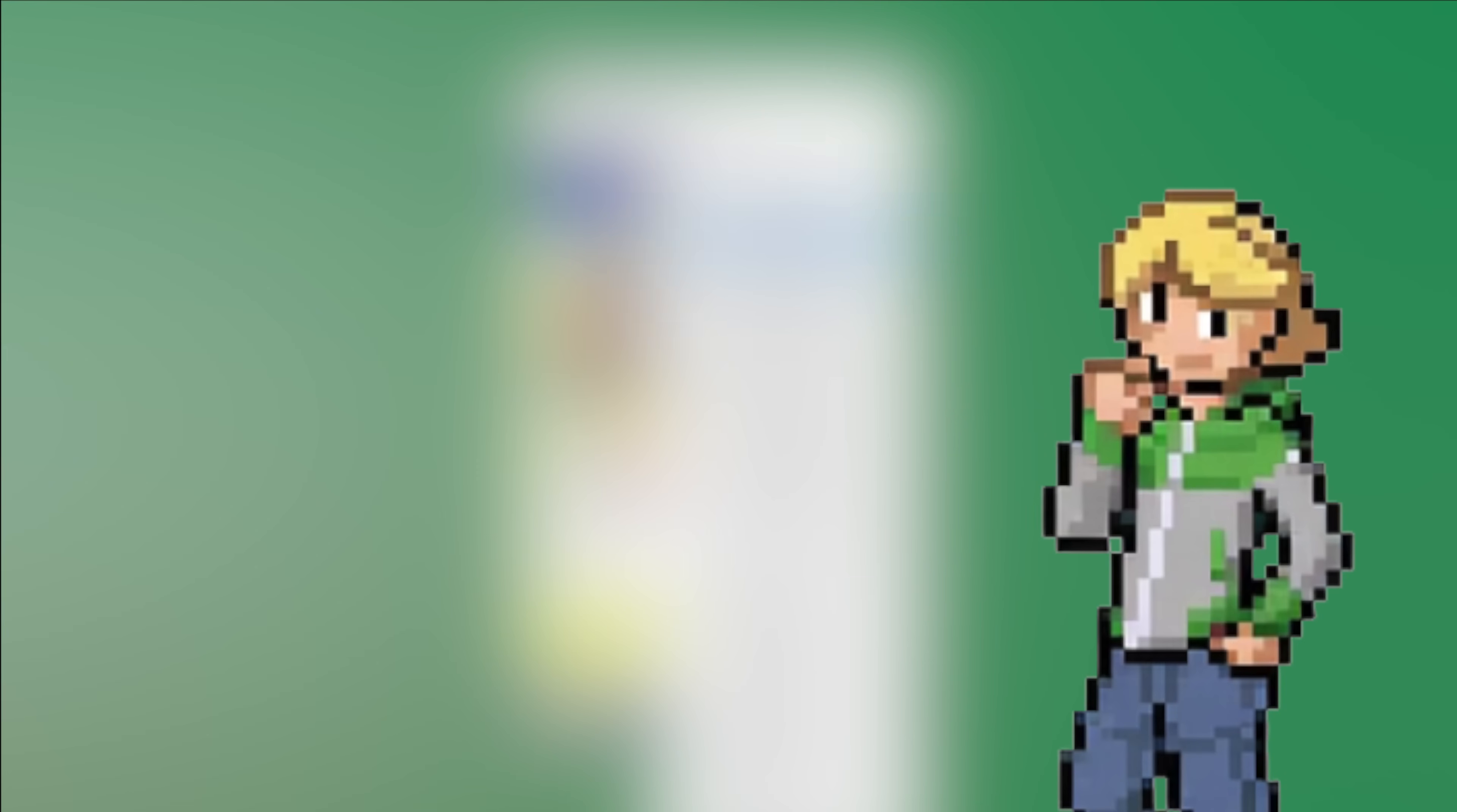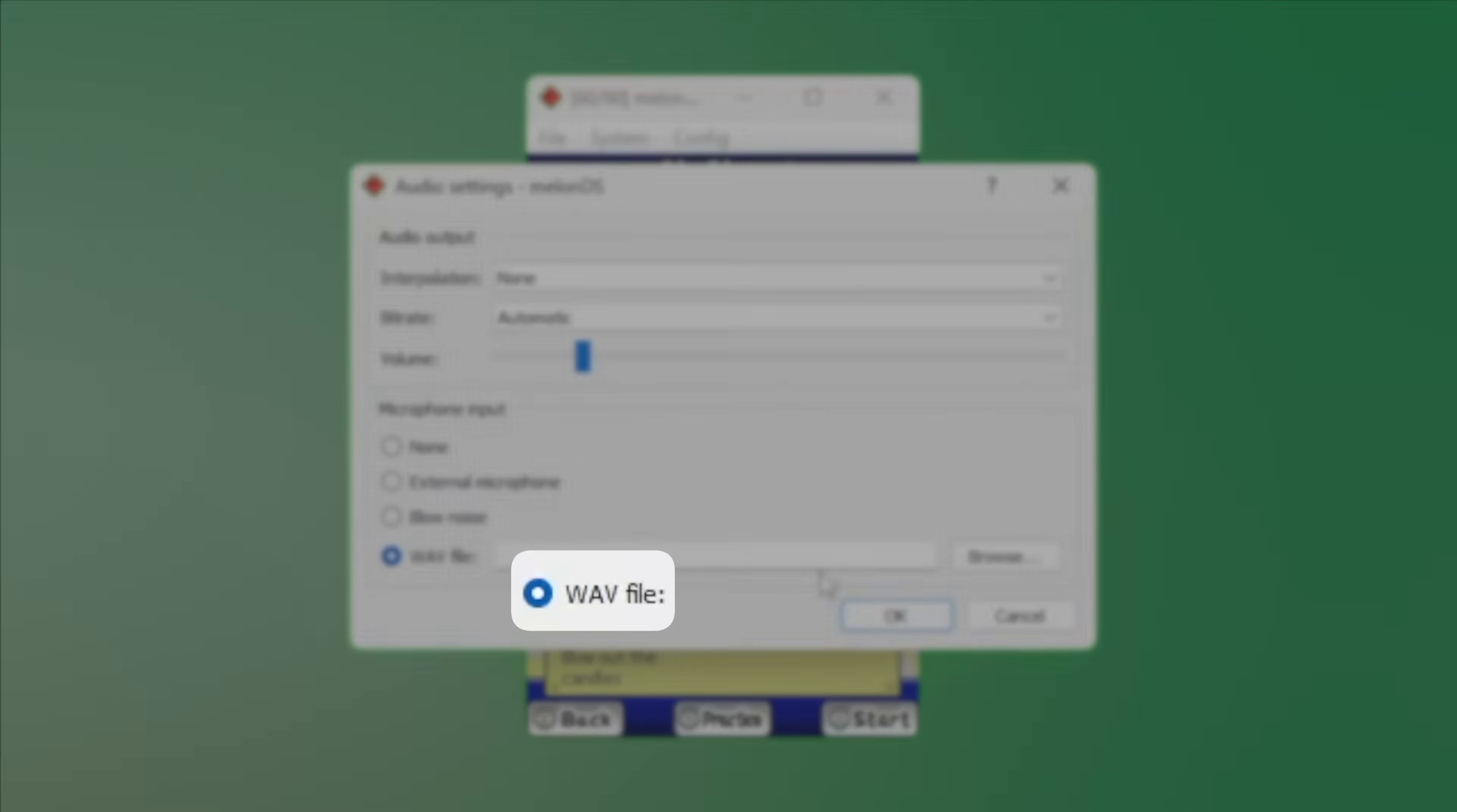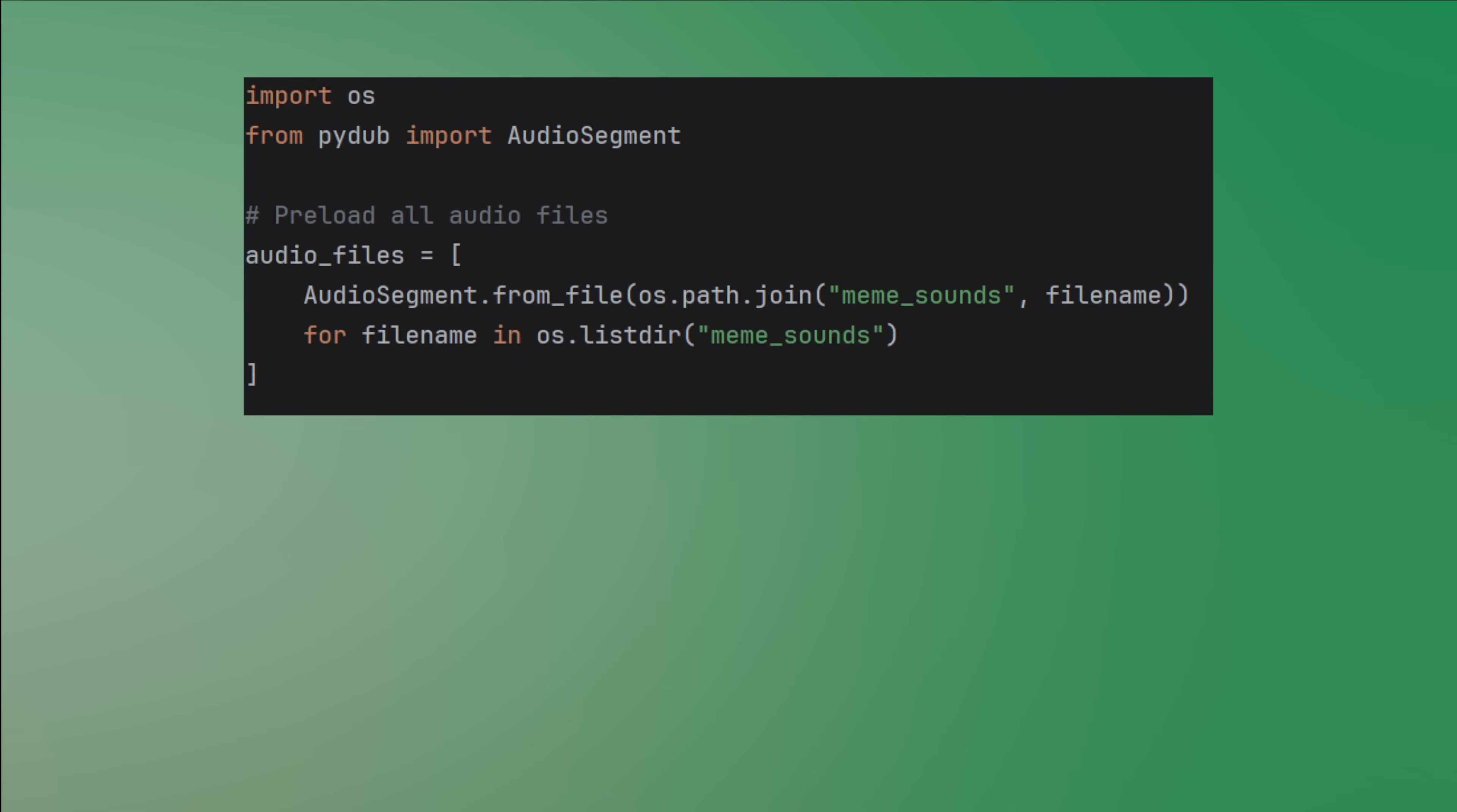To appease my younger audience I handpicked a selection of sounds from contemporary popular culture to use as input. I can only select one file though so here's a quick excursion on how to merge audio files using Python. All you need to do is put the files you want into a folder. I called mine meme sounds.